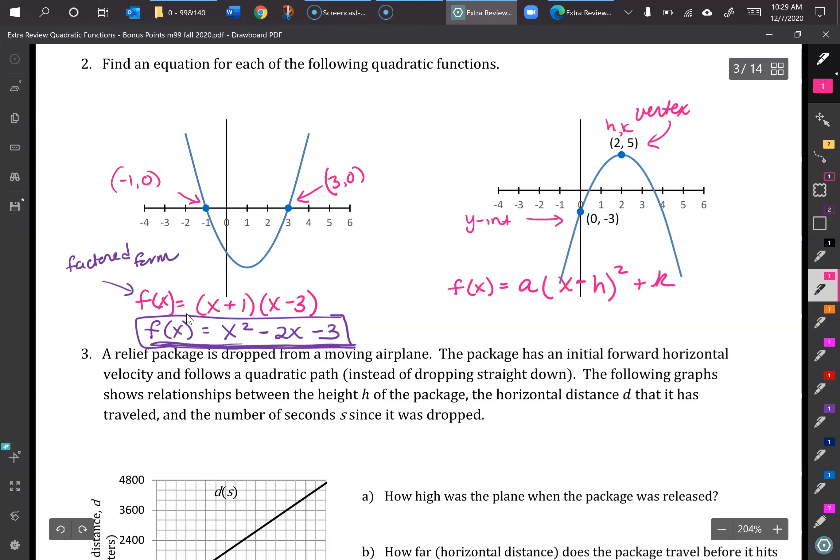I'm going to go ahead and just set those in in a different color. So we have x minus 2 squared plus 5. Now we do need to figure out what a is. So we're going to have to substitute in this y-intercept there so we can solve for a.